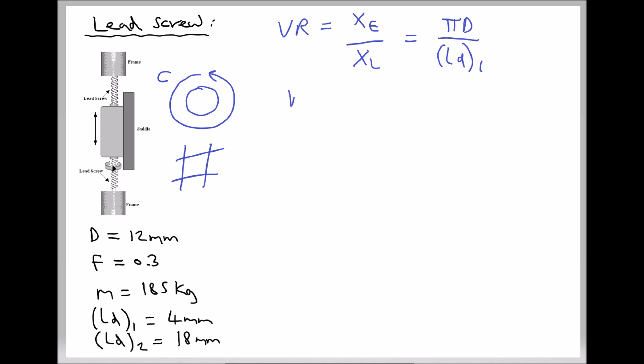The velocity ratio in the first instance, when we have a lead distance of 4 mm, is going to be π times the diameter, or we can write that as 12π over 4. Note that I can work in millimetres so long as the diameter and the lead distance both remain in millimetres. That gives a velocity ratio equal to 9.42. It's a ratio so it doesn't have any units — it's a comparison of the distance moved by the effort compared to the distance moved by the load.